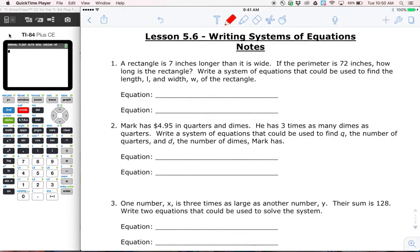Alright, first question. A rectangle is 7 inches longer than it is wide. If the perimeter is 72 inches, how long is the rectangle? Write a system of equations that could be used to find the length L and the width W of the rectangle.